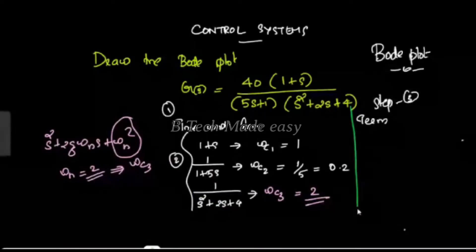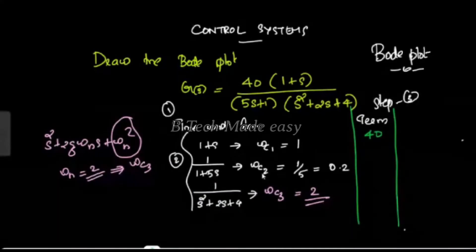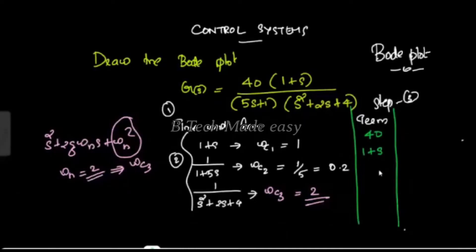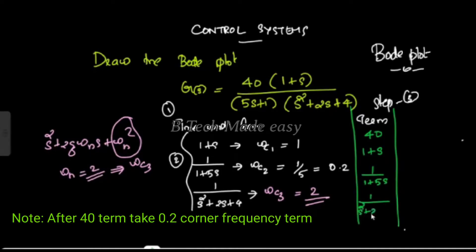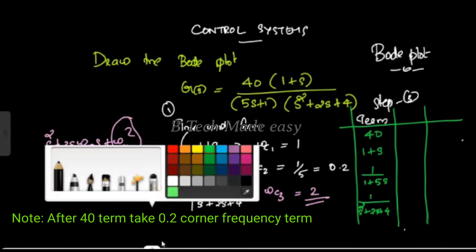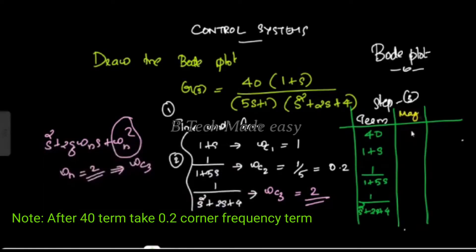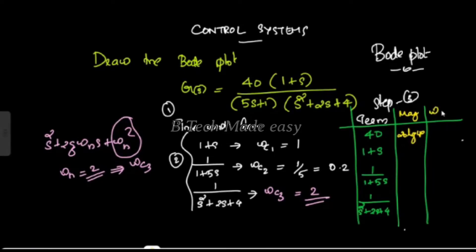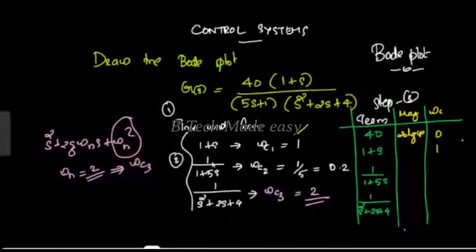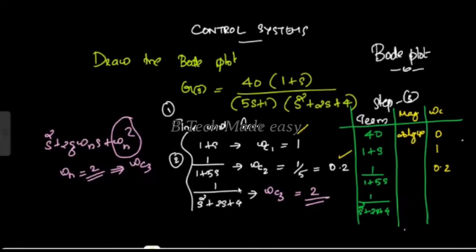The terms arranged in order are: first, constant term (magnitude = 40); second, corner frequency from (1 + s) at ω = 1; third, 1/(1 + 5s) at ω = 0.2; last, 1/(s² + 2s + 4) at ω = 2. The corner frequencies are identified for each term.